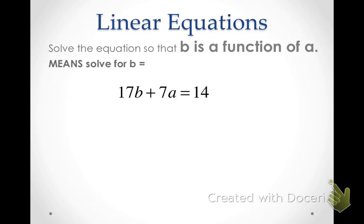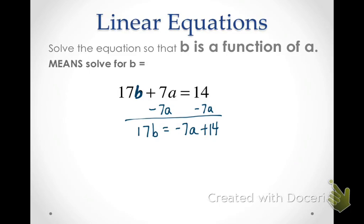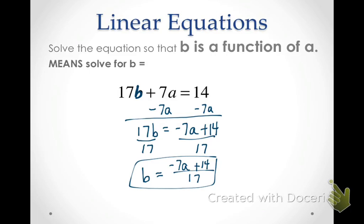This next example is one that sometimes doesn't turn out as nice. I'm going to solve the equation so that b is a function of a — meaning solve for b, getting b alone. I'll start by moving 7a over by subtraction, and then divide everything by 17. Now I'll stop and look: negative 7 and 14 don't easily divide with 17, so I'm not going to divide each term by 17. Instead I'll just leave it as a single fraction. Nothing is going to simplify here. If you did want to divide every term by 17 that's okay too, but whenever nothing simplifies, it's okay to leave it in this less simplified form.